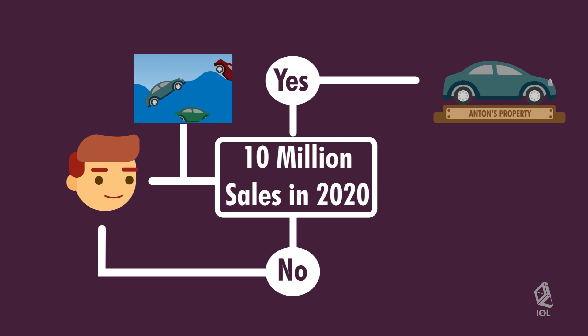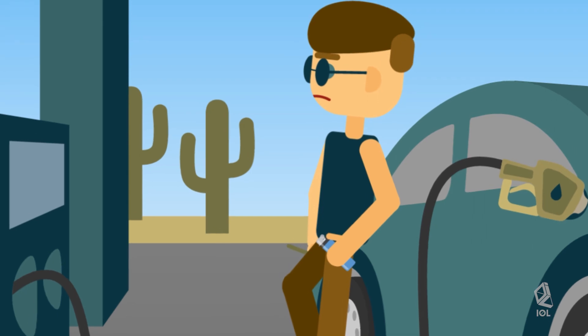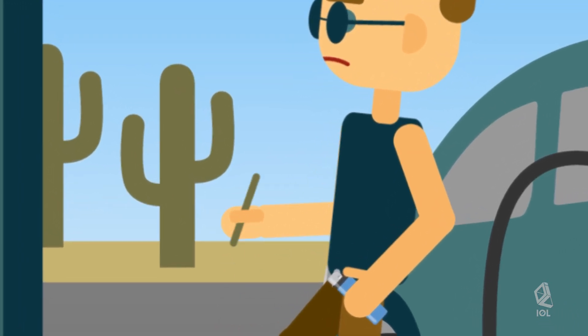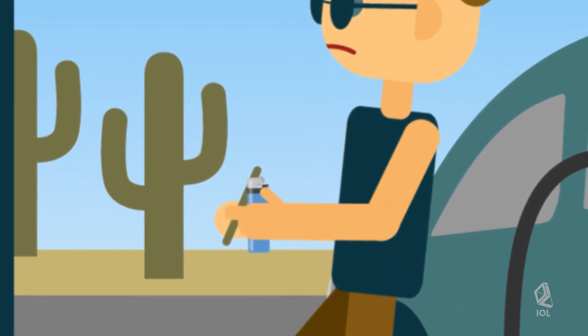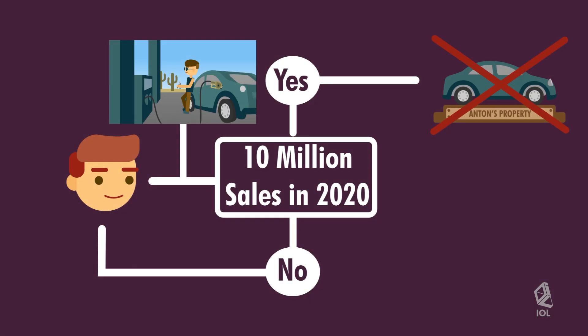However, if it is with Antin's fault — such that Antin lit a cigarette while filling up the car with gasoline, causing the car to explode — then Antin is obliged to pay damages should Henry be able to reach the 10 million pesos sales for 2020.